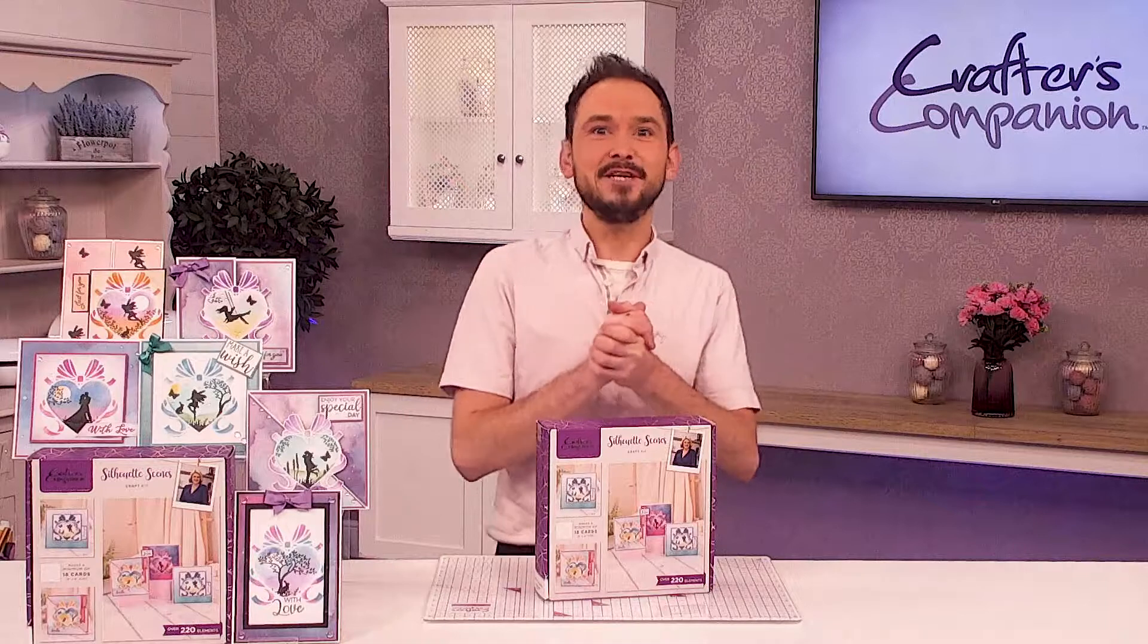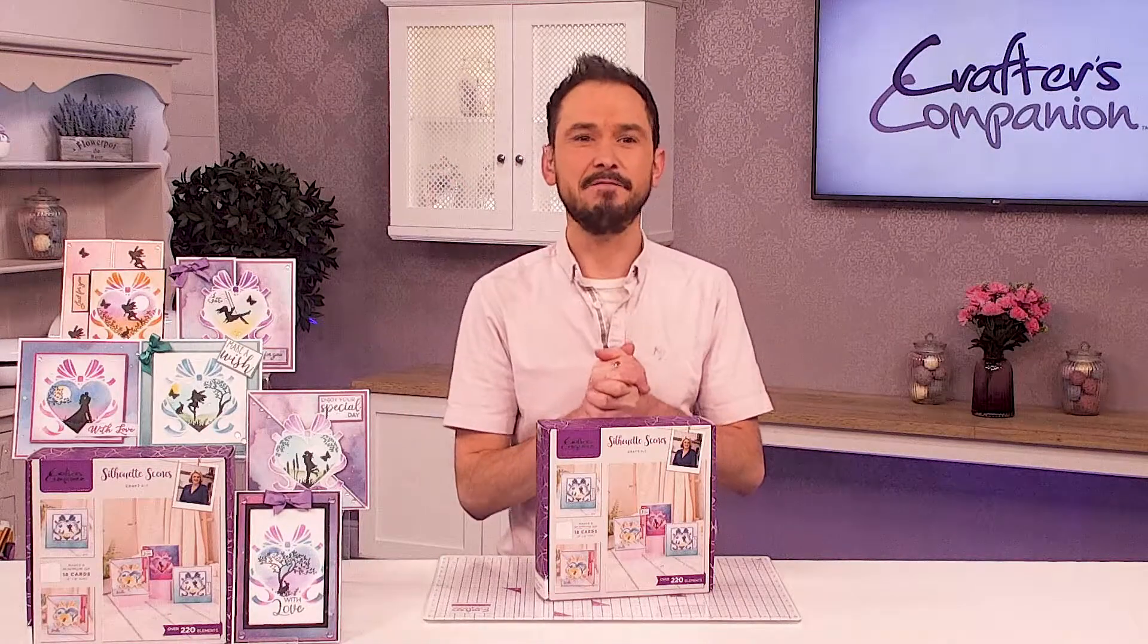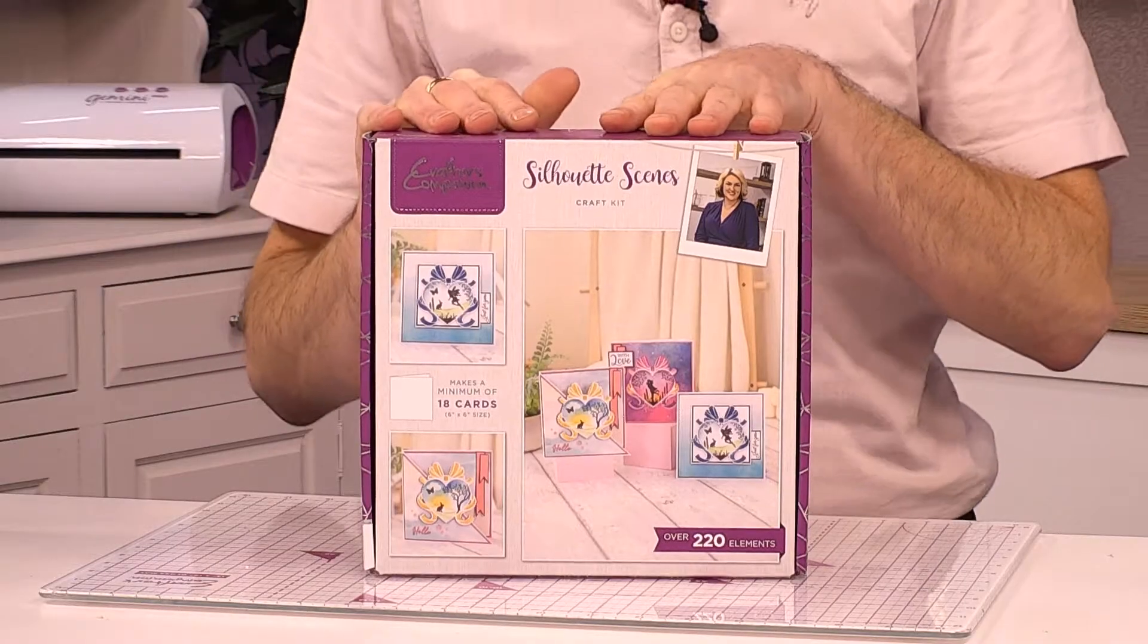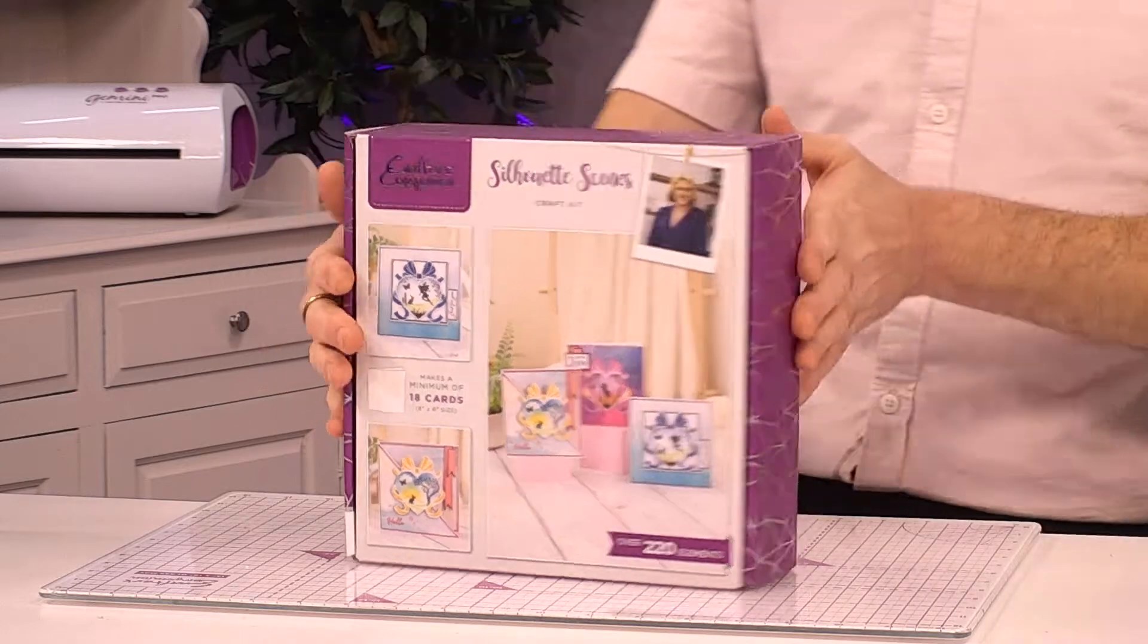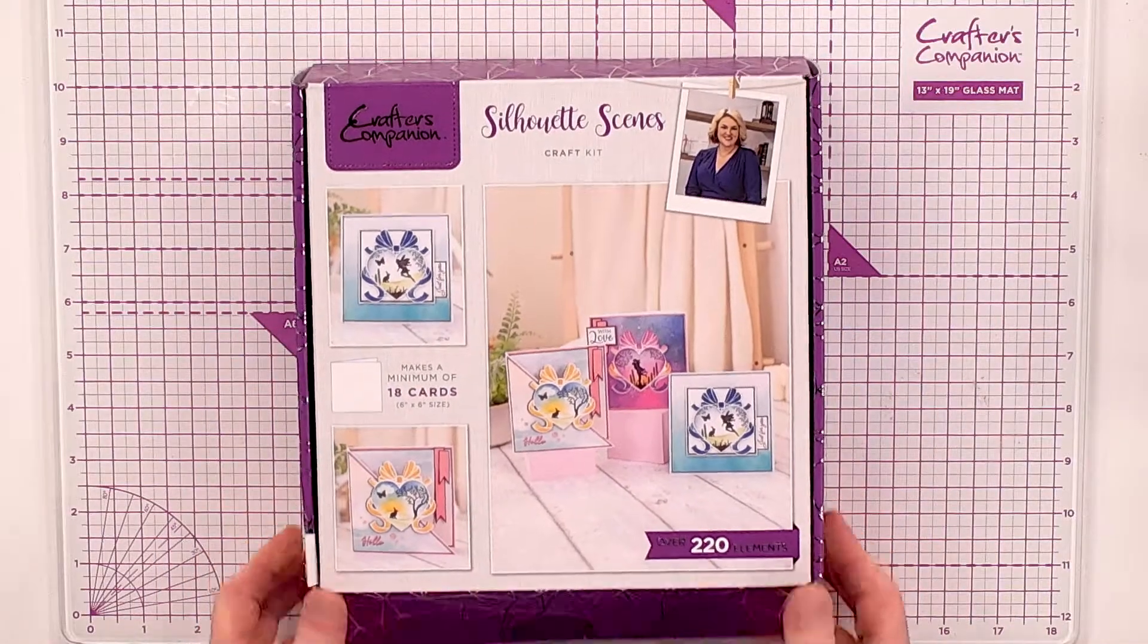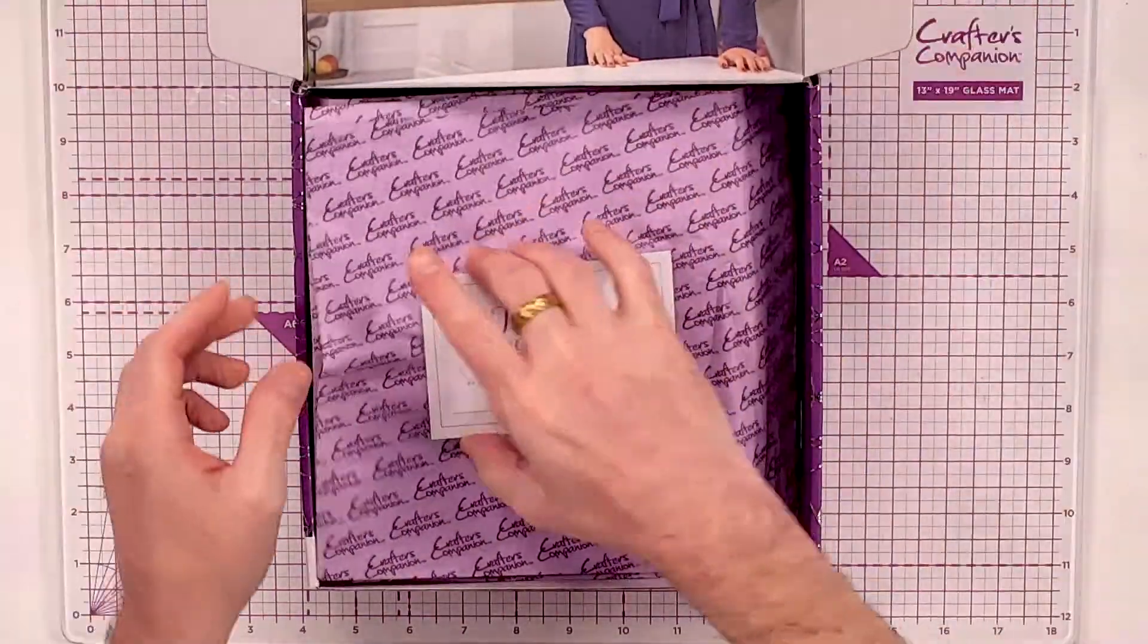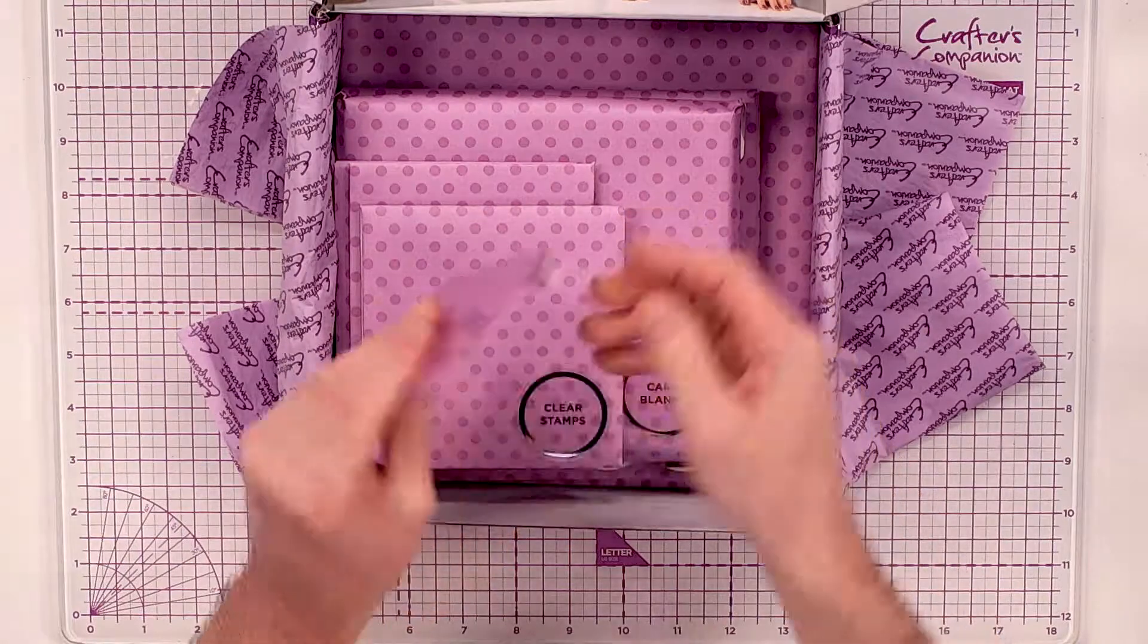Hey guys, right today I'm here to show you a brand new subscription box. Can you believe it, it's number 54. It's all about the silhouette scene craft kit. You've got over 220 elements and it makes a minimum of 18 cards. Let's dive straight in and have a look.